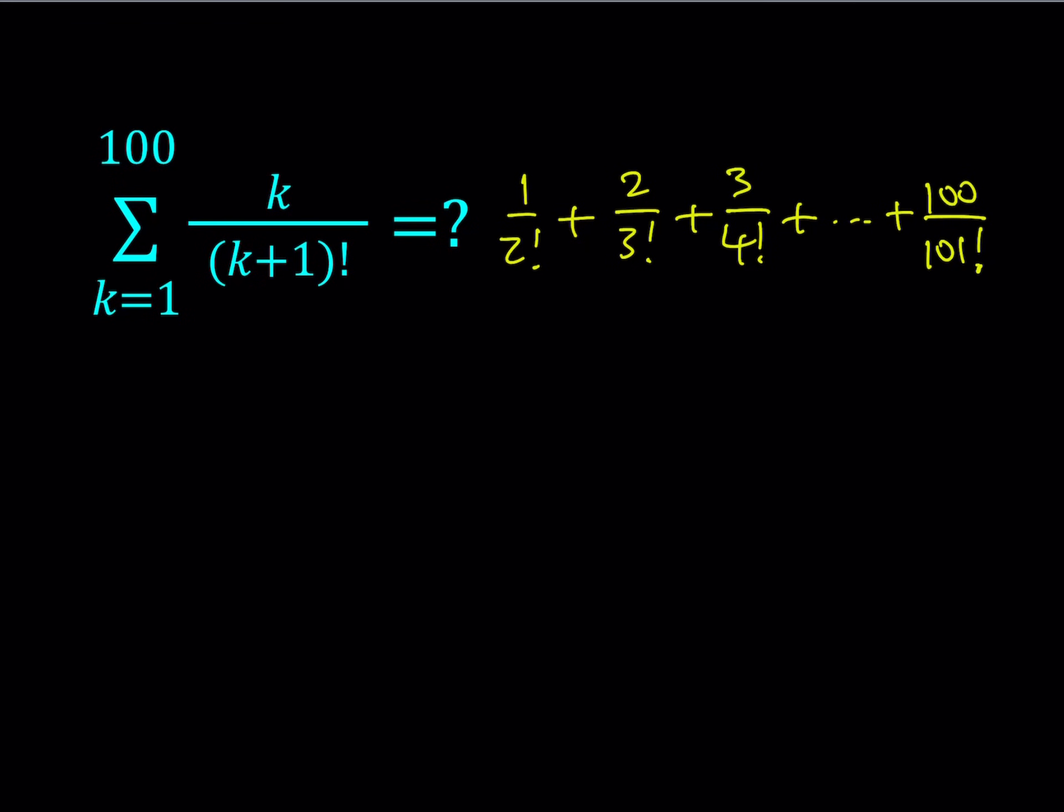When we're solving problems for integer solutions or when we're manipulating rational expressions, a common strategy that we use is to manipulate the numerator so that we can separate this into pieces and make it a telescoping sum. What is a telescoping sum? A lot of terms are going to cancel out, leaving us with a few terms here and there. Let's go ahead and do that.